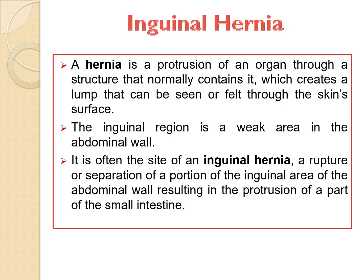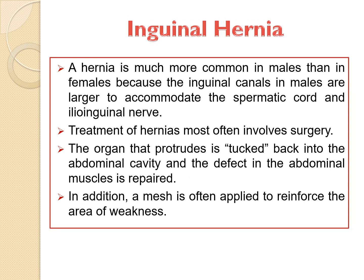Now coming to the pathological conditions — inguinal hernia. A hernia is a protrusion of an organ through a structure that normally contains it, which creates a lump that can be seen or felt through the skin surface. The inguinal region is a weak area in the abdominal wall and is often the site of inguinal hernia — a ruptured or separated portion of the inguinal area of the abdominal wall, resulting in the protrusion of part of the small intestine. Hernia is much more common in males than in females because the inguinal canals in males are larger to accommodate the spermatic cord and ilio-inguinal nerve. Treatment most often involves surgery: the organ is tucked back into the abdominal cavity, the defect in the abdominal muscles is repaired, and a mesh is often applied to reinforce the area of weakness.